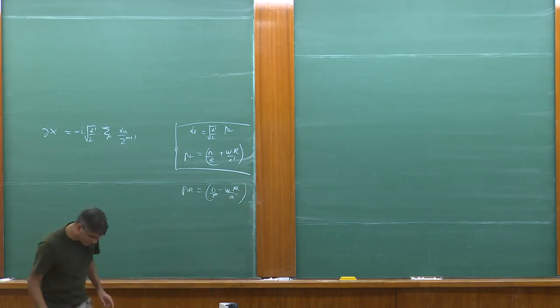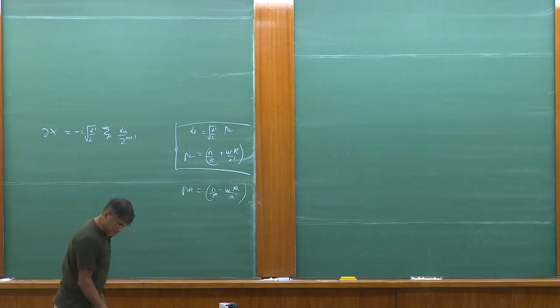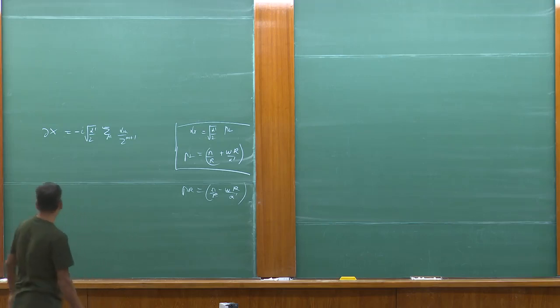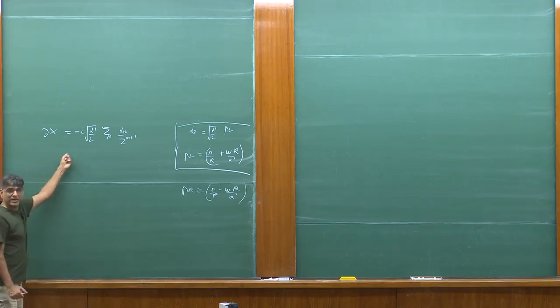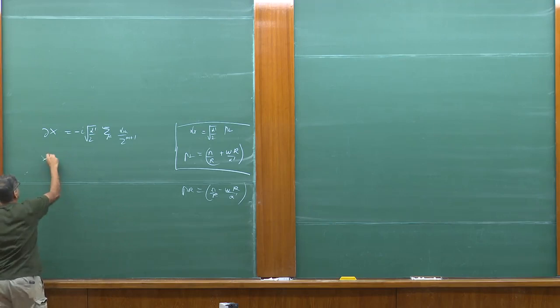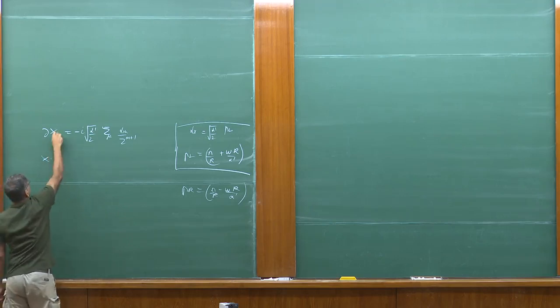p_R was given by n over r minus omega r over alpha prime. And if we wanted to, we could integrate this expression to get x. This is del x.